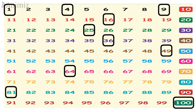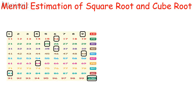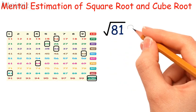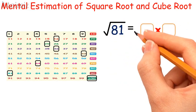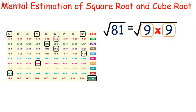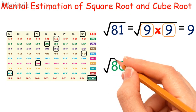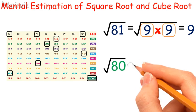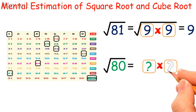We can easily find the square root of any perfect square. Like 81 — we know there are two same numbers we multiply together to get 81, so the square root of 81 is 9. But what will happen if we find the square root of 80, which is not a perfect square? There isn't any two same numbers which we multiply to get 80.